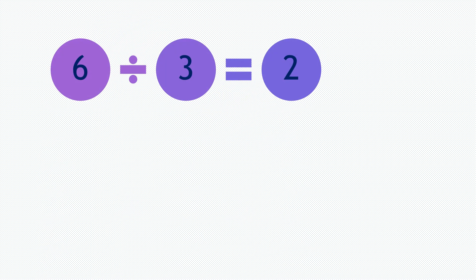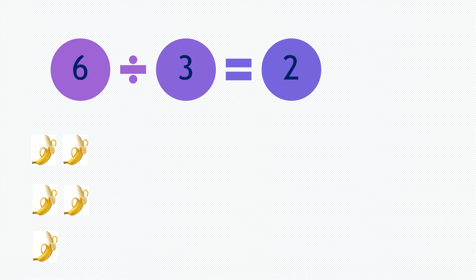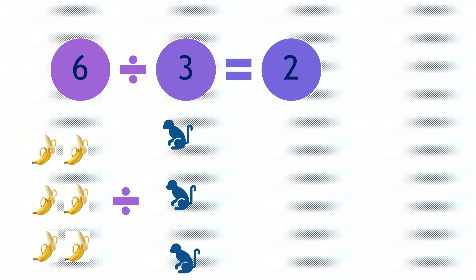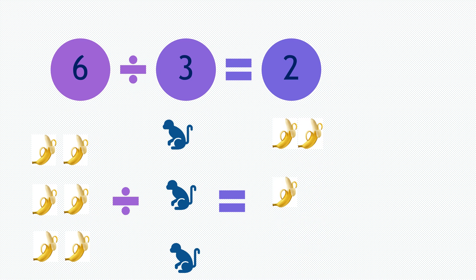Moving on to our next question. 6 divided by 3 equals 2. So if you have 6 bananas — 1, 2, 3, 4, 5, 6 — and divided by 3 monkeys, each monkey will receive 2 bananas: 1, 2 — 1, 2 — 1, 2.